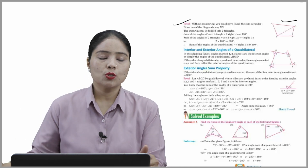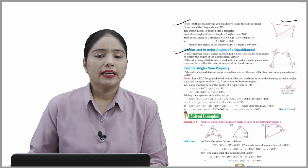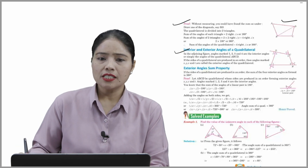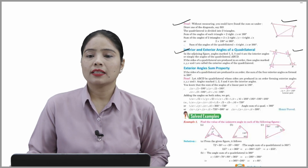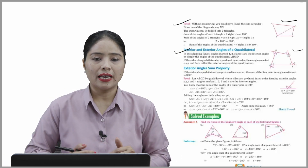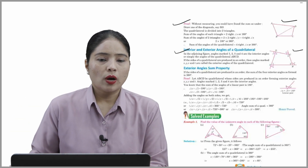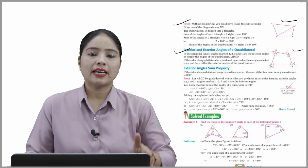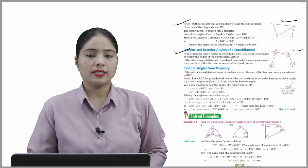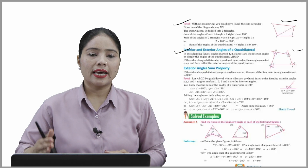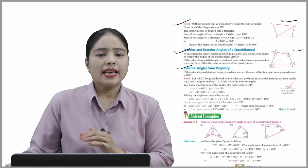Interior and exterior angles of a quadrilateral: in the figure, the angles marked 1, 2, 3, and 4 are the interior angles of quadrilateral ABCD. If the sides of a quadrilateral are produced in order, then the angles marked x, y, z, and t are called the exterior angles of the quadrilateral.